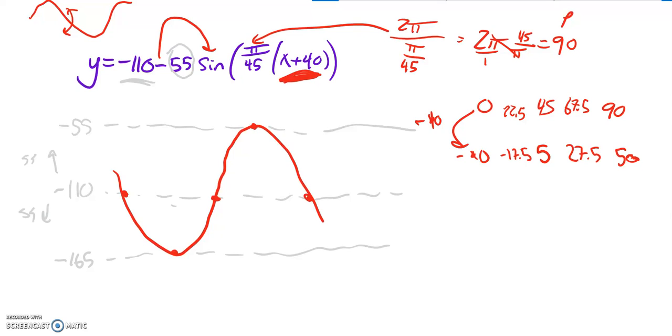So my first point here is at negative 40 and a height of negative 110. This one is at negative 17.5, a height of negative 165. This one here at 5, negative 110. I'm going to erase that.